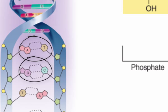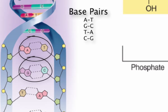So when you look at the double helix, where one strand has thymine, the other strand will always have adenine, and vice versa. The same goes for cytosine and guanine. We call these base pairs.